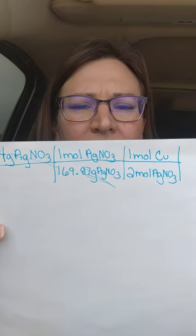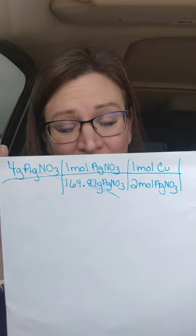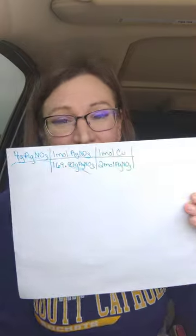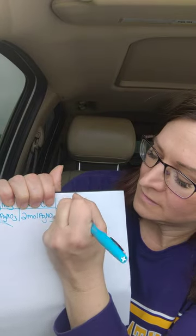So we've got two moles of silver nitrate. Next, we need to see what we're solving for — we are looking to see how many grams of copper. So now we need to look at the equation and see how many moles of copper we have, and we have just one. So we'll put that up top: one mole of copper. Now we need to get from moles to grams, so that's when we bring in the molecular mass again. We'll put one mole of copper on the bottom, and the molecular mass of copper is 63.55.